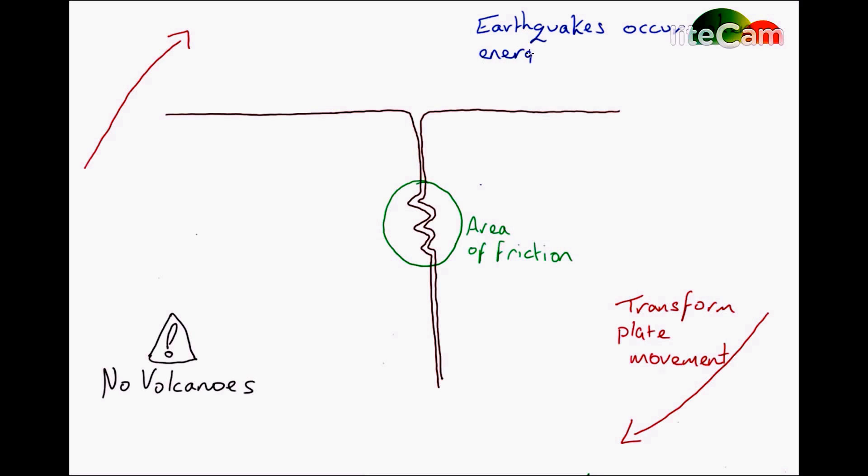See that area that I talked about before? The area that I've now surrounded in green? That is the area of friction. For any earthquake to occur, the energy of this transform movement needs to exceed the friction that is built up in that area.